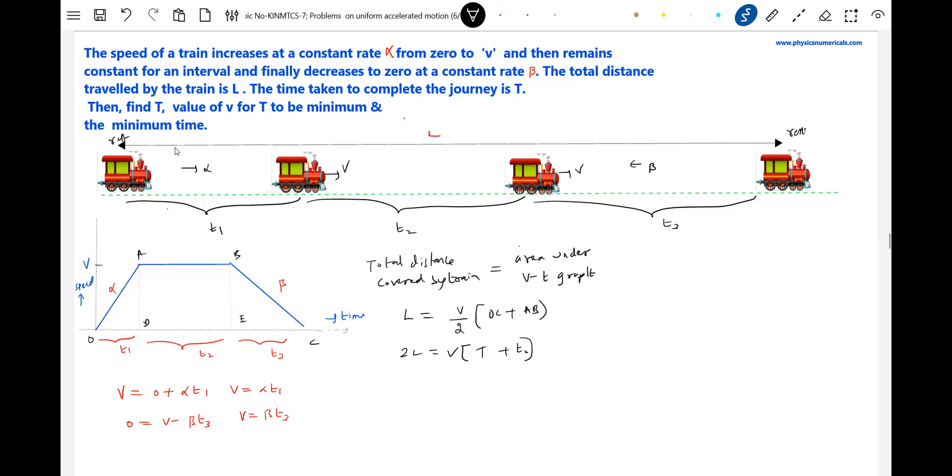Is it t1 equal to t3? No. Okay, this t2, let me rearrange. 2L by v equal to t minus t plus t2, so what is t2 equal to? t2, keep it. This is something very fundamental equation which is going to help us a lot. Why we are calculating t2? Because the total time of journey that is being asked. Okay, the total time of journey is what? t1 plus t2 plus t3.